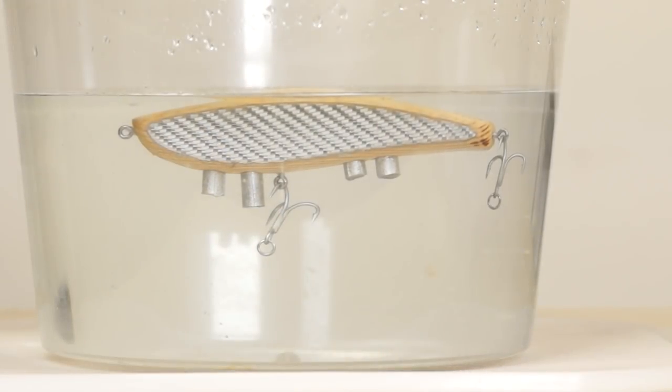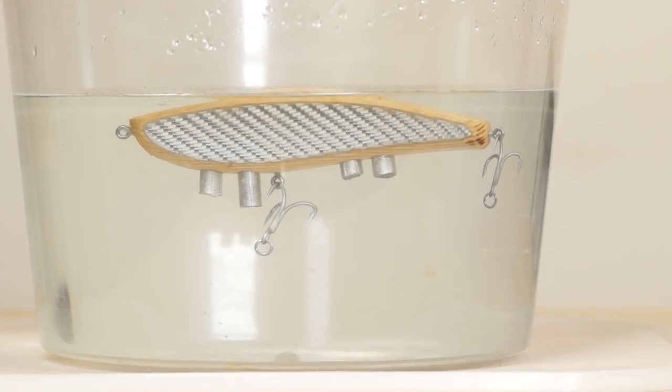At the moment the lure is sitting almost level between the eyes but I'd like it to lean back slightly to compensate for the heavy trace that I'll be using when I'm fishing.